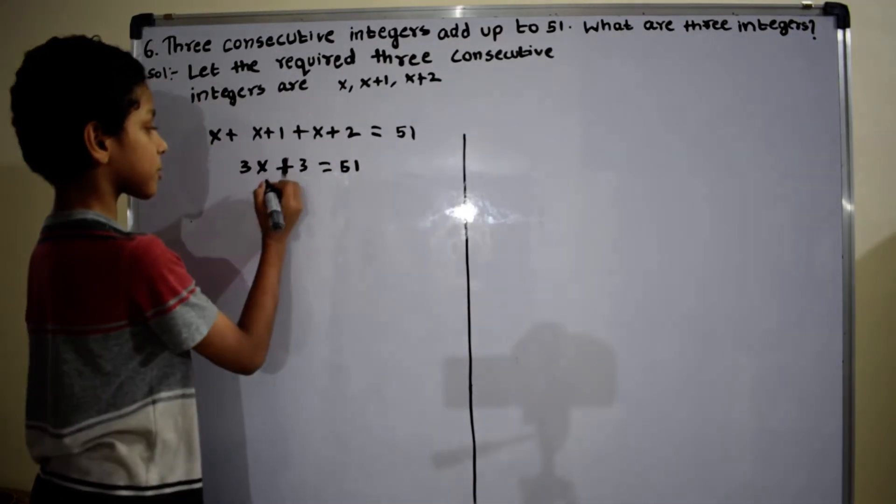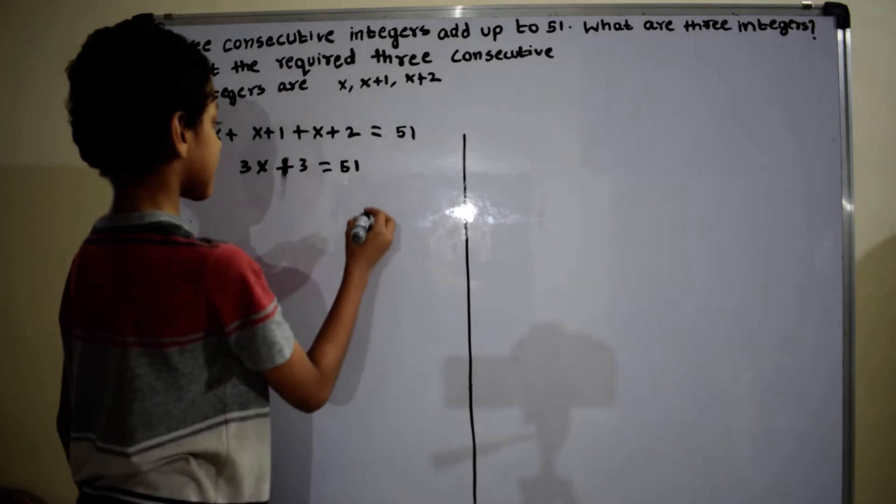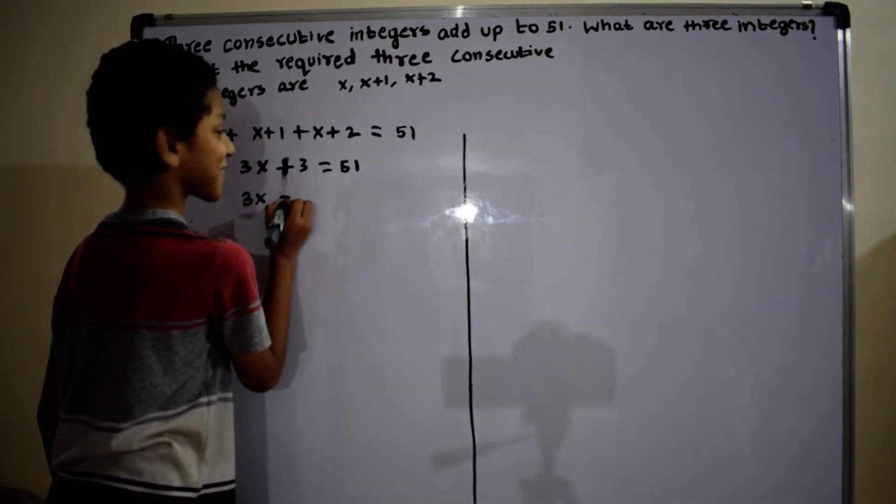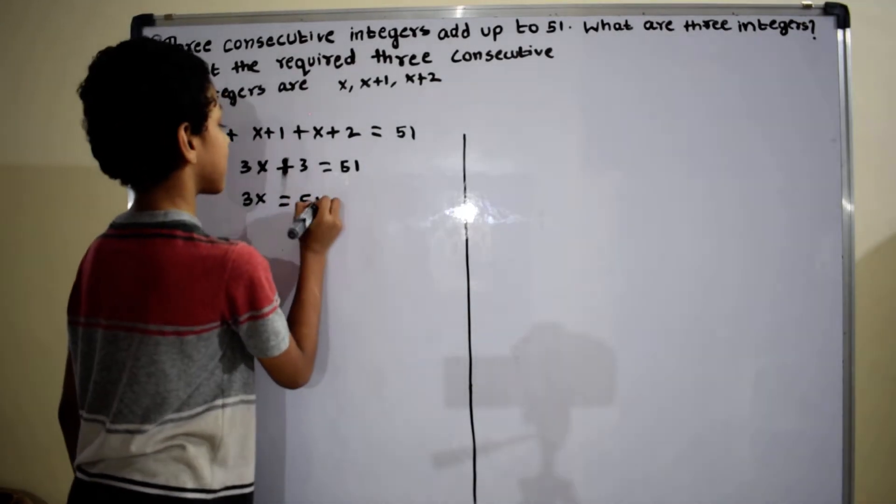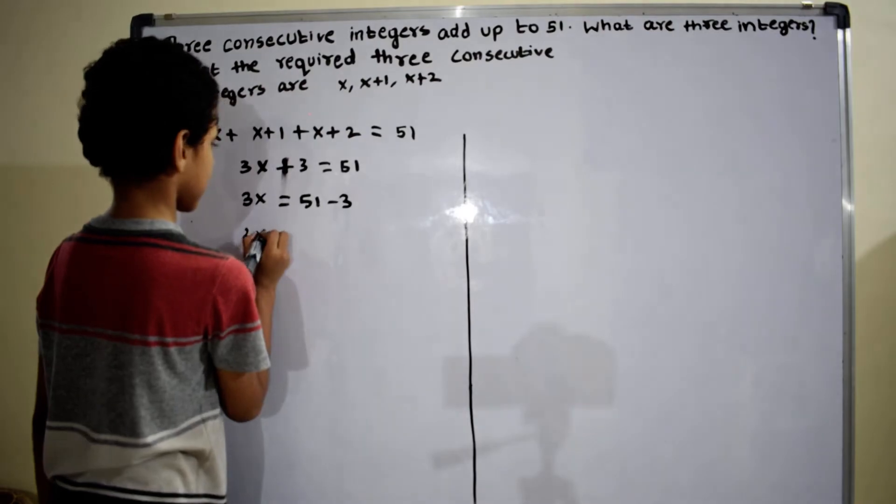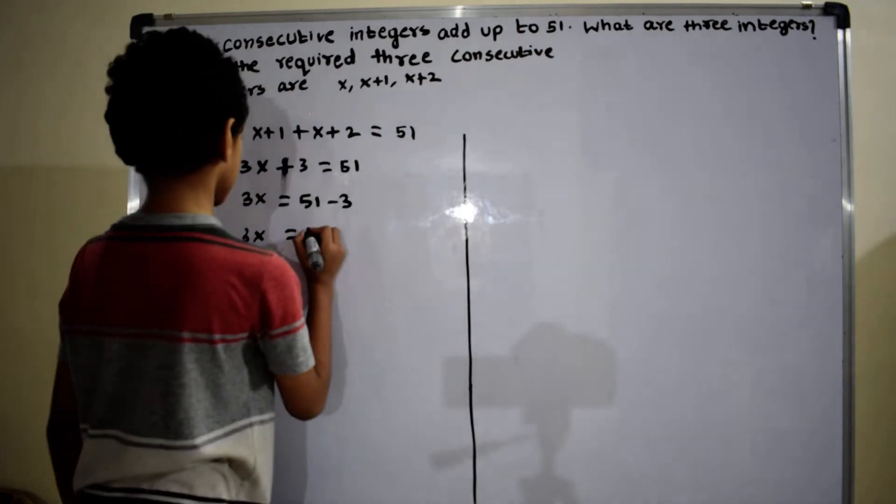Now I am transposing this plus 3 to the right hand side. Then it becomes 3x equals 51 minus 3. 3x equals 48.